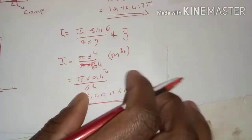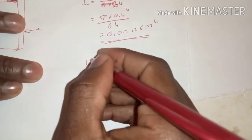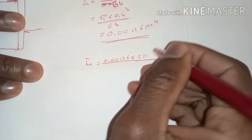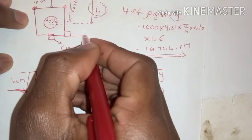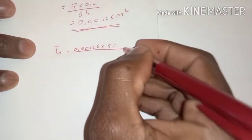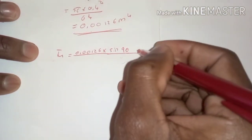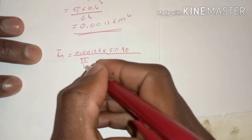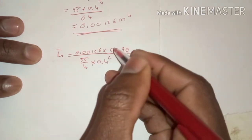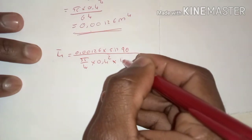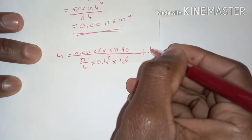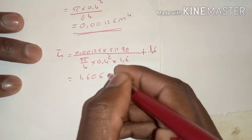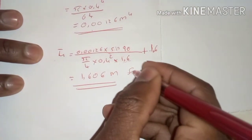Now we substitute into the h-bar formula. h-bar equals 0.00126 times sine squared 90° — since the gate is vertical, θ = 90° and sine squared 90° = 1, so we can neglect it — divided by the area π/4 × 0.4 squared, times y-bar of 1.6, plus y-bar of 1.6. This gives h-bar equal to 1.606 meters from the surface.